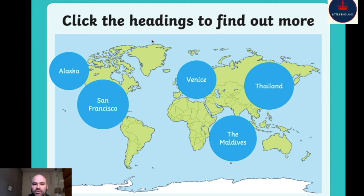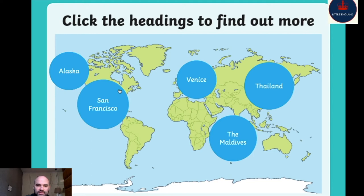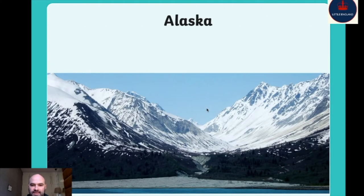Let's click on the headings to find out more. We have North America, South America, Africa, Europe, Asia, Australia or Oceania, and Antarctica. Here is Alaska in the United States of America. The USA is here, Canada is here, and Alaska is on the west side of Canada — it's a very big state. Alaska is very mountainous and very cold.